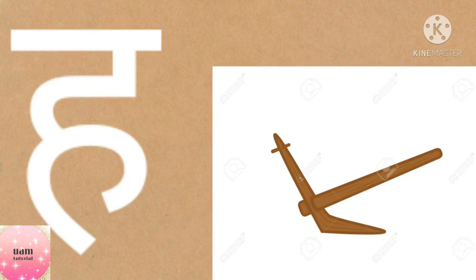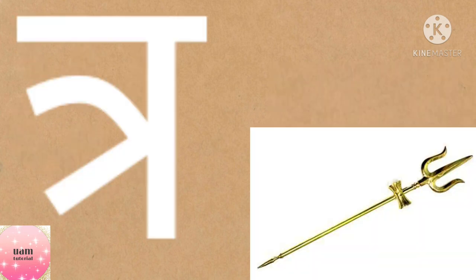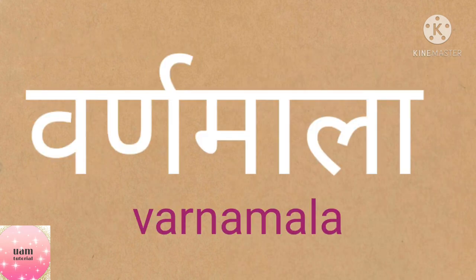Ha se hath, Ksha se kshatriya, Tra se trishul, Gya se gyani. These are the Hindi alphabets from Ka to Gya along with the pictures. In Hindi, we divide Varnamala into two parts: Swar and Vyanjan.